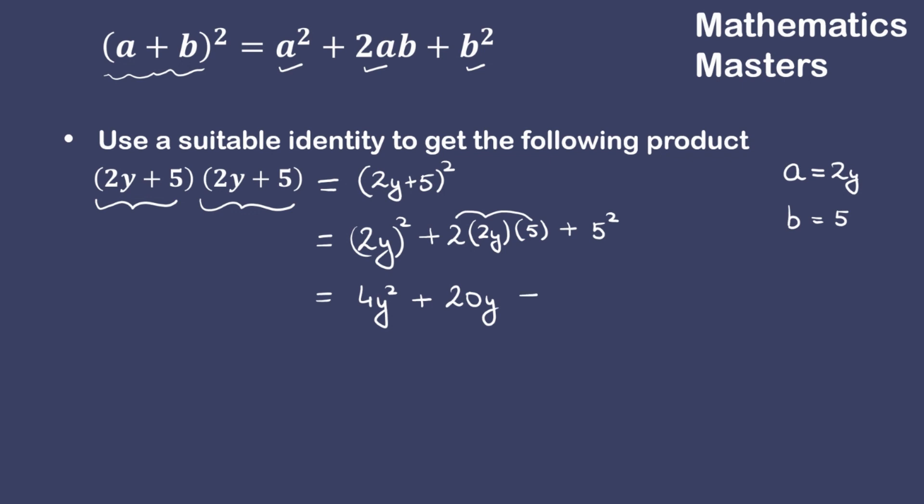So the answer is 20y plus the square of 5 which is 25. By using the identity, we were able to find the product of 2y plus 5 with itself. That's all for the video.